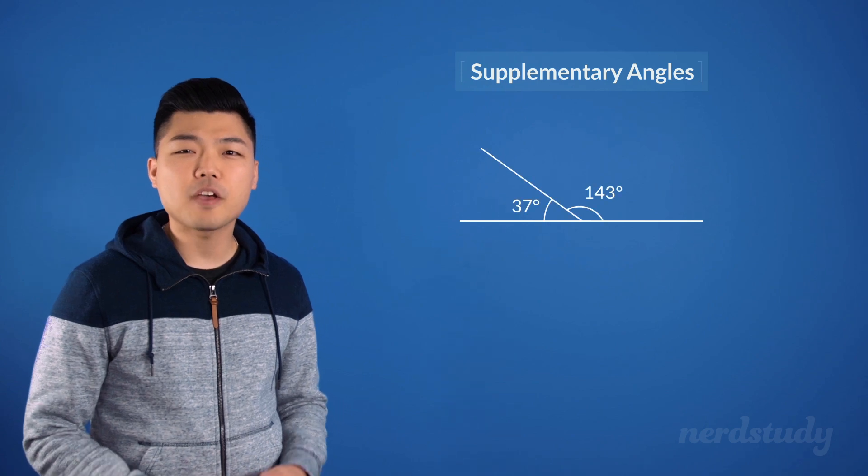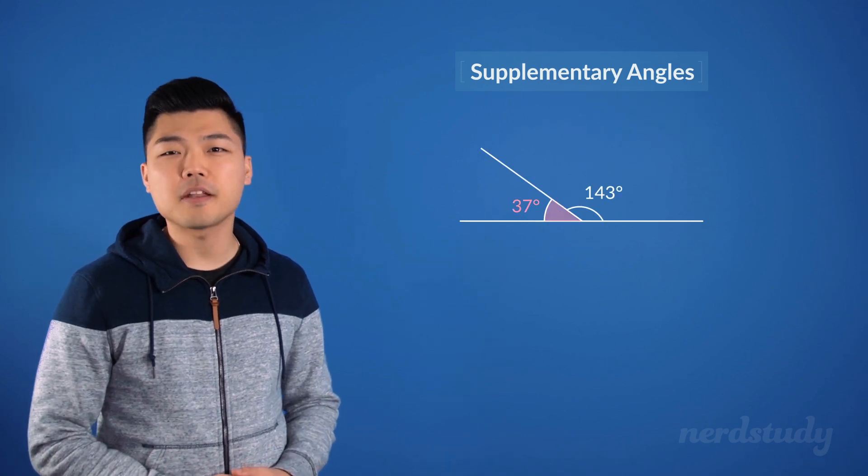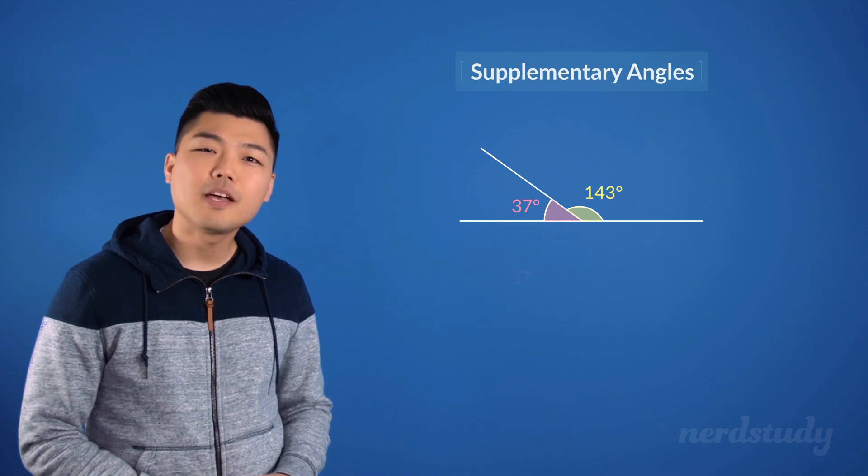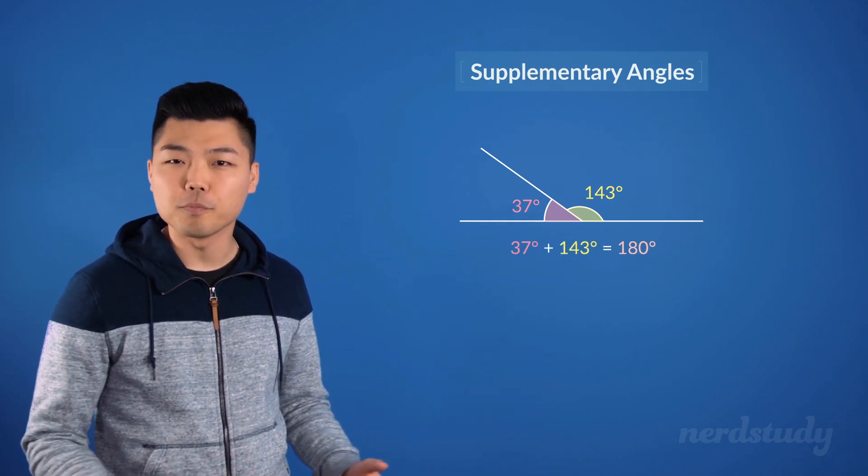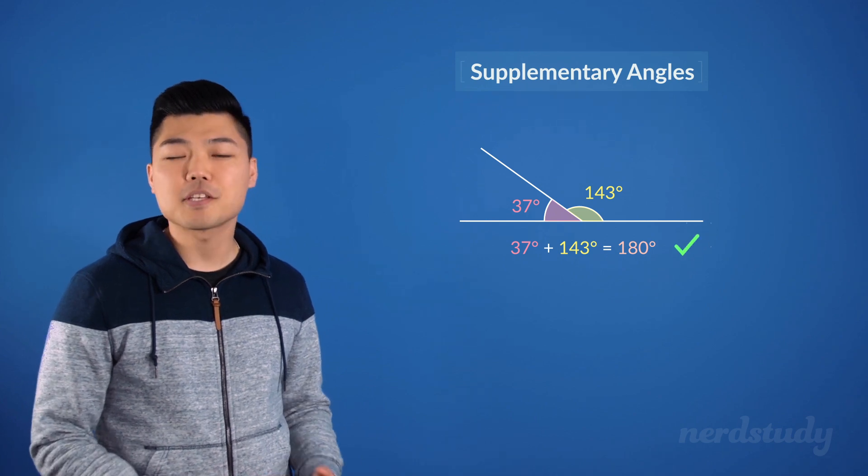In this example, we have a 37 degree angle and a 143 degree angle. And if we add them together, we get 180 degrees. So, these are in fact supplementary angles.